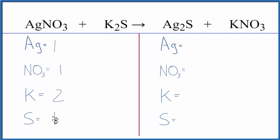Two potassium, one sulfur. Product side: two silver, one nitrate, one potassium, and one sulfur.